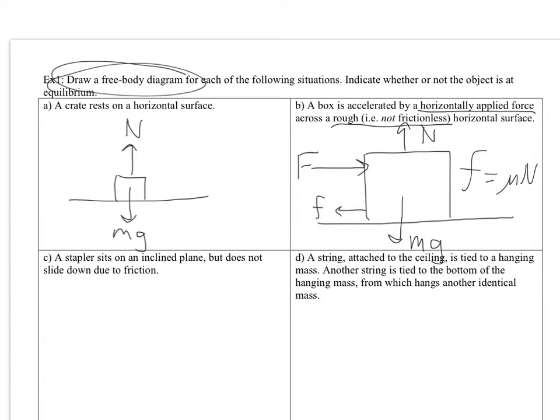For part C, we've got a stapler resting on an inclined plane. Alright, an inclined plane is a slope, like that. I'm sorry if you didn't know that word, but there it is, it's an inclined plane. And it says it does not slide down due to friction. If we draw, I'm going to draw the boxiest stapler ever. There, it's a stapler, just trust me, okay?